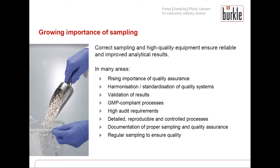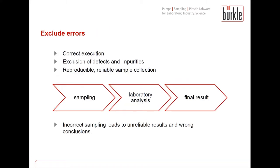Regular sampling is needed to ensure the quality of final goods, and correct execution is an eminently important issue. Only with representative and authentic samples can a reliable statement about the quality and composition of the material be made. Sampling is the first step of the entire quality control chain and at the same time the most critical one. Defects and impurities during sampling call all further steps into question and cannot be compensated even by the most sensitive analytics afterward.